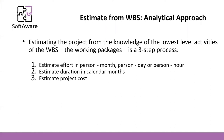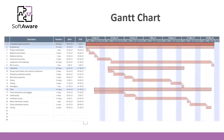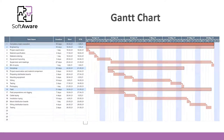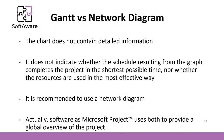Let's start with some concepts about what is a Gantt chart and the network diagram. This is a Gantt chart — as you can see, we have the tasks, an estimation for each task, some connections between those tasks, and we can see the time. But what is a network diagram? A network diagram is more complete than a Gantt chart because a Gantt chart does not contain all the detailed information, does not indicate whether the schedule completes the project in the shortest possible time, nor whether the resources are used in the most effective way. It is recommended to use a network diagram.